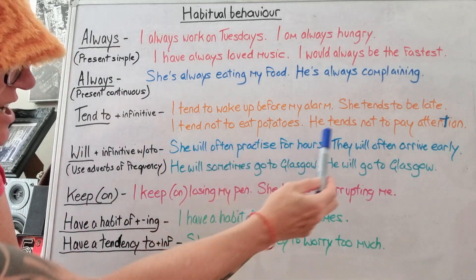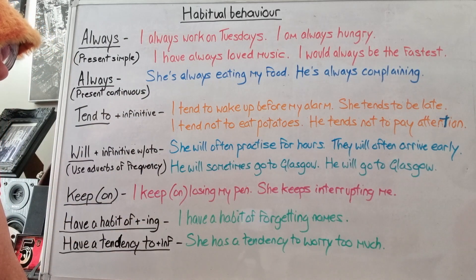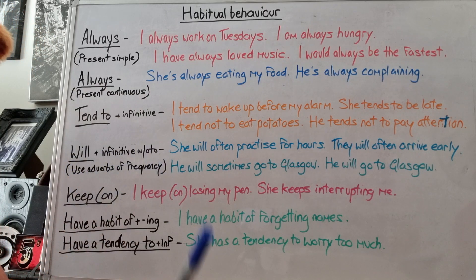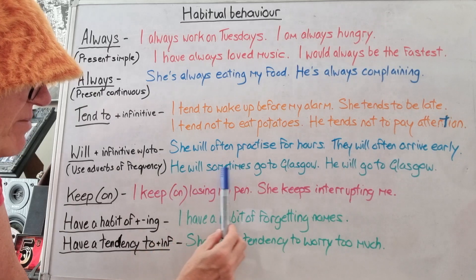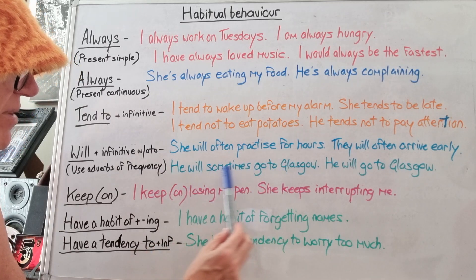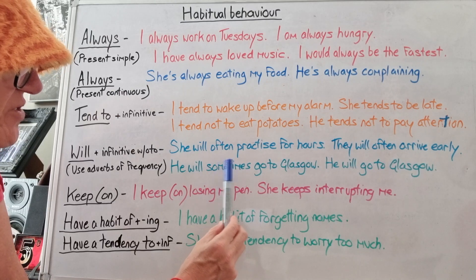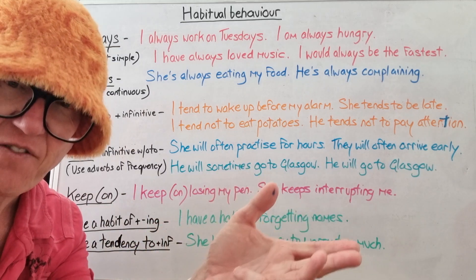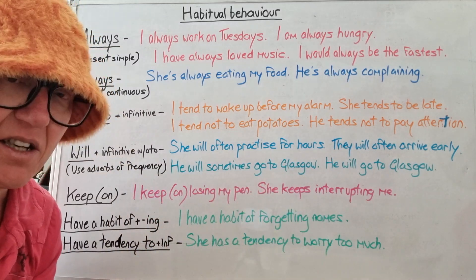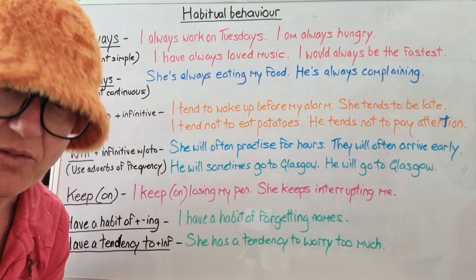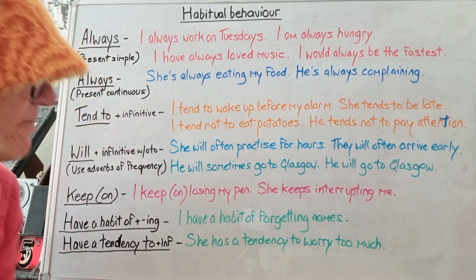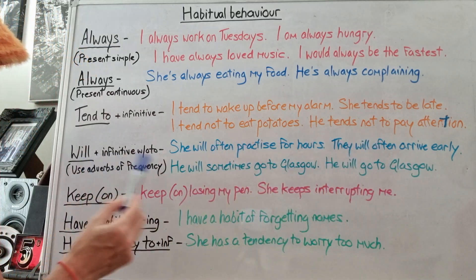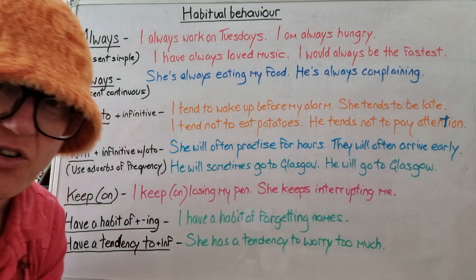So this is a habit: they will often arrive early. You must use adverbs of frequency, or you will have a problem. He will sometimes go to Glasgow — this is a general habit. If I remove 'sometimes' and say 'he will go to Glasgow', you'll be thinking that's the future. So always use adverbs when you use 'will' for present habits, otherwise you cause confusion.